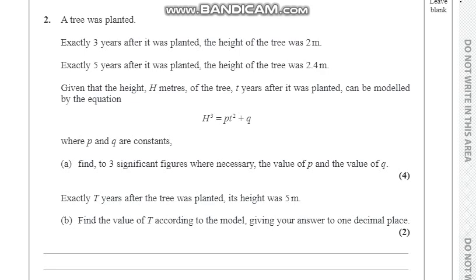A tree was planted. Exactly 3 years after it was planted, the height of the tree was 2 meters. Exactly 5 years after it was planted, the height of the tree was 2.4 meters. Given that the height H meters of the tree t years after it was planted can be modeled by the equation H³ = pt² + q, where p and q are constants. Part A states: find to 3 significant figures where necessary the value of p and the value of q.